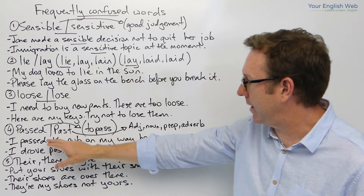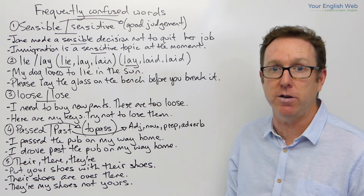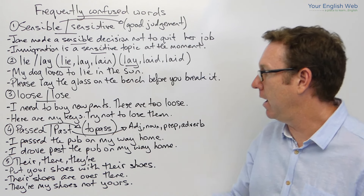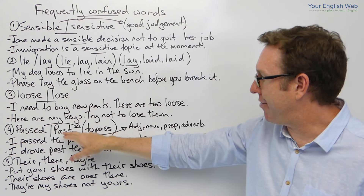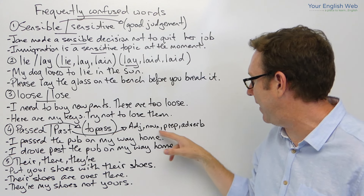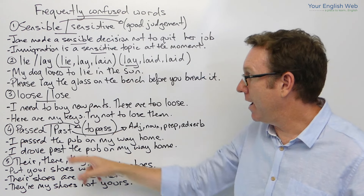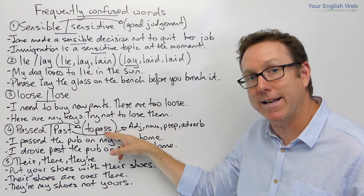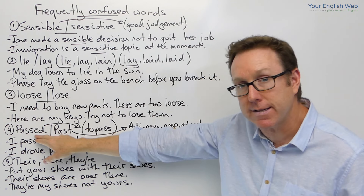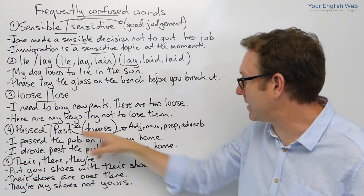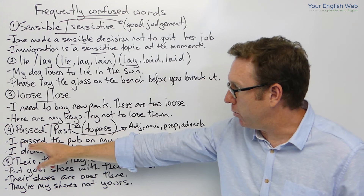Now, the next one is passed and past. The confusion here comes from the pronunciation — passed and past. But remember that to pass is a verb. And past can be an adjective, a noun, a preposition, or an adverb, but it can never be a verb. So, if you need to use this as a verb, the form is passed. And past is an adjective, noun, preposition, or adverb.